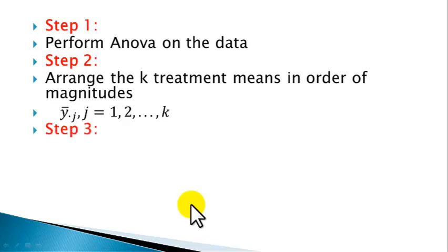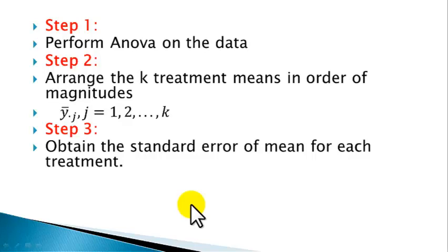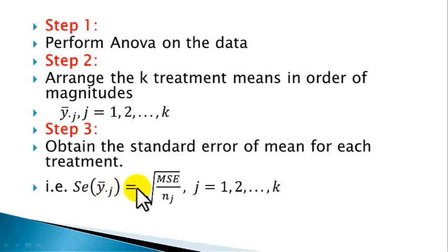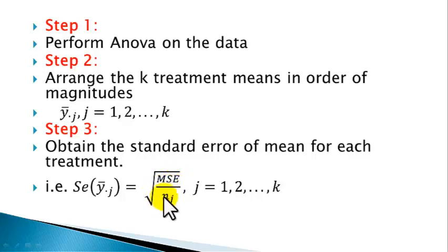Step 3: Obtain the standard error of mean for each treatment using the formula — standard error of mean of treatment j equals the square root of mean square for error divided by n_j, where n_j is the number of observations under treatment j, for j running from 1 to k.